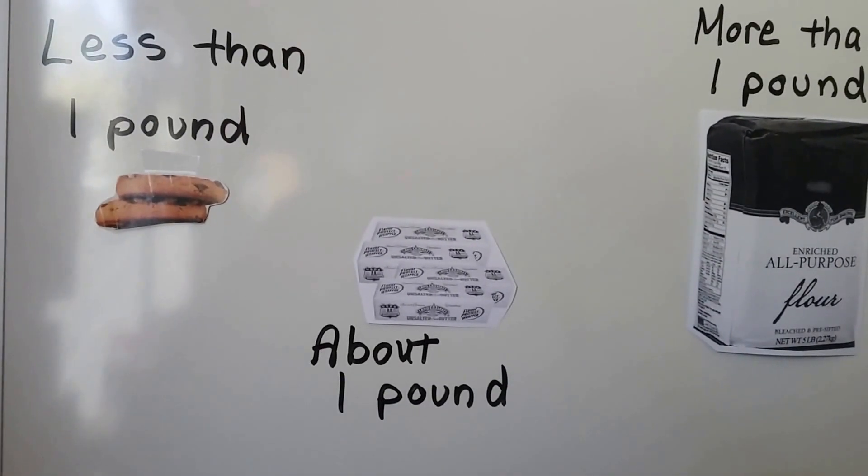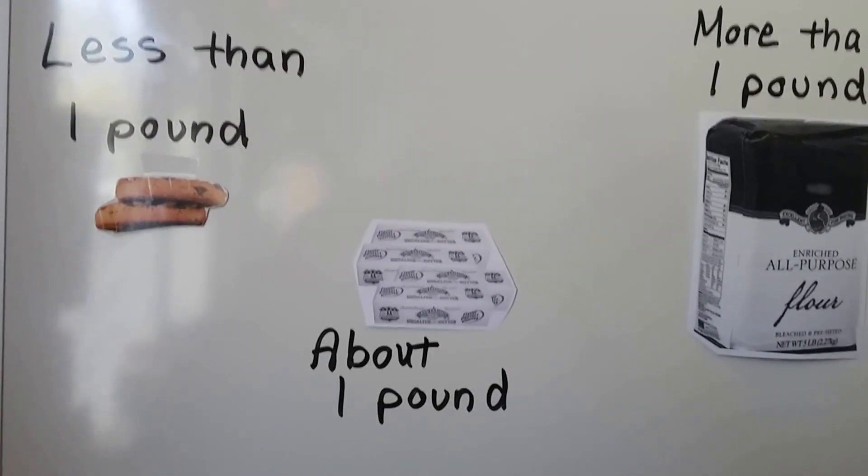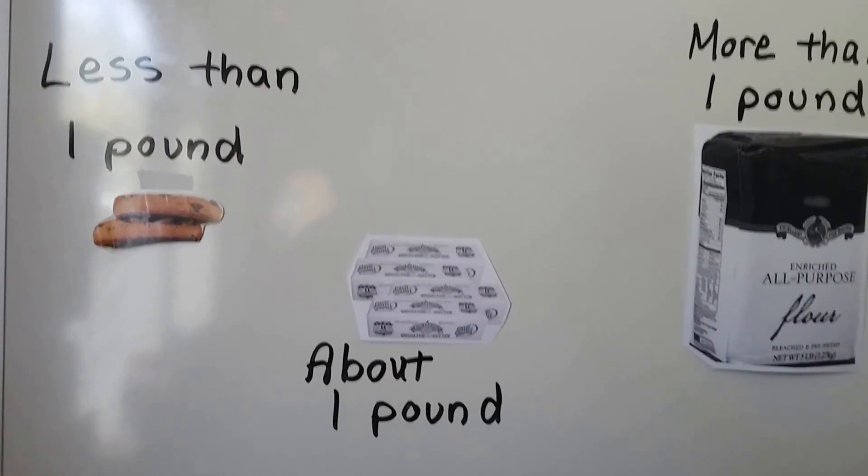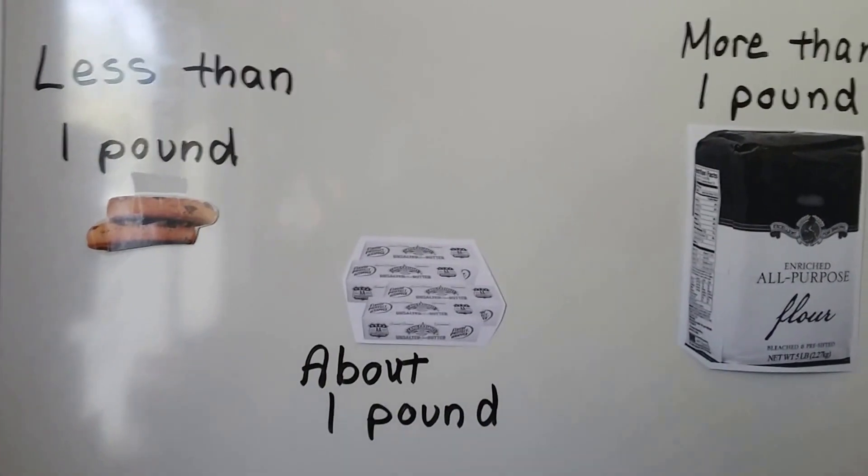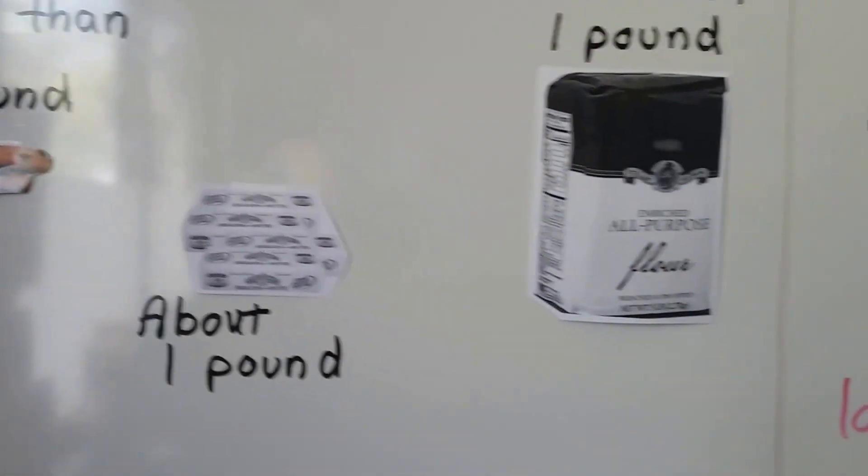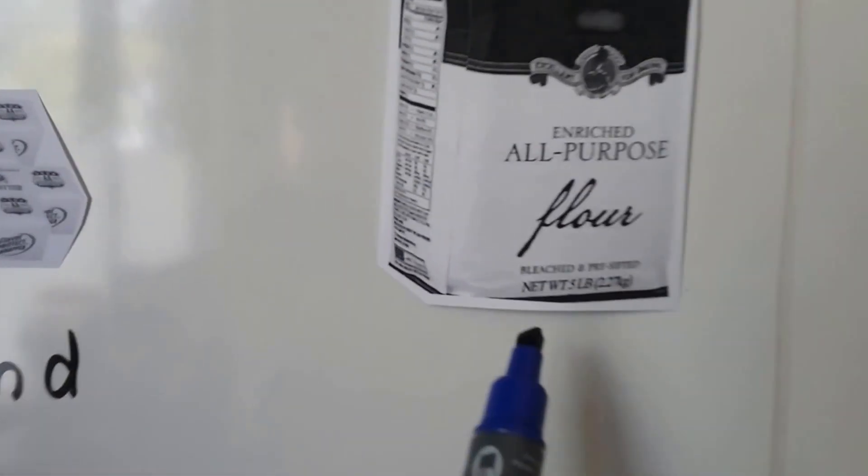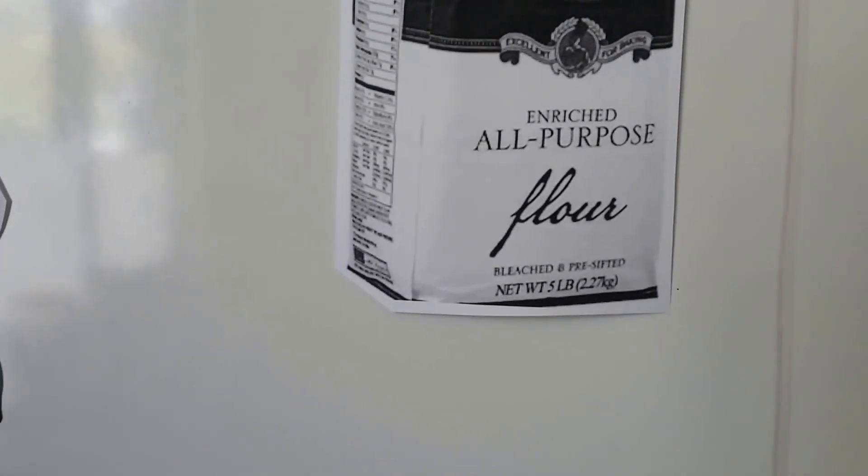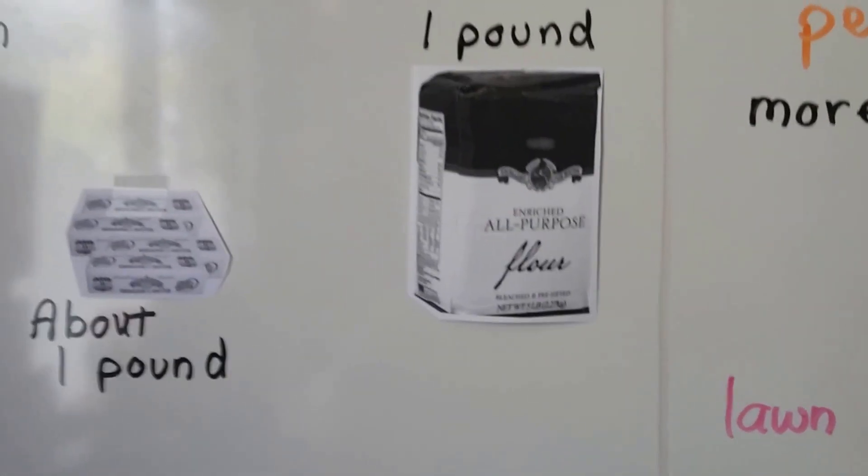These two cookies are less than one pound. Four sticks of butter is about one pound. And this bag of flour, that's more than a pound. In fact, if we look at the bottom right here, we can see it says it's five pounds. So yeah, that's more than a pound.